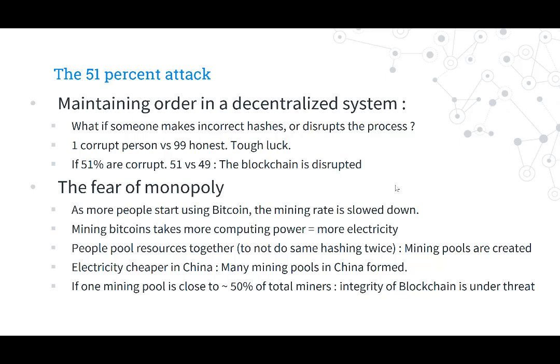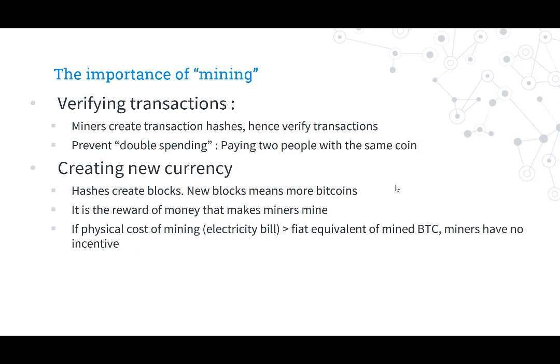There is also a fear of monopoly: mining Bitcoins is most cost-effective where electricity prices are low. In China, electricity is really cheap, so a lot of Bitcoin mining happens there, and there is a hidden fear that China might monopolize Bitcoin. Miners are very important because they verify transactions — without miners there would be no way to hash those transactions and make them permanent. Miners are also responsible for creating new currency, because every time a new block is generated, some new Bitcoins are released to the person who completed that block.